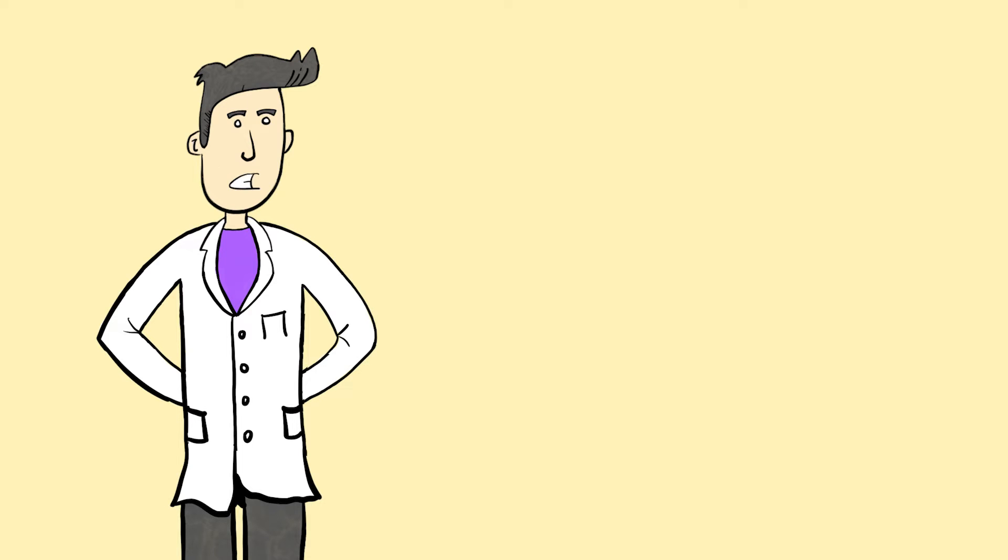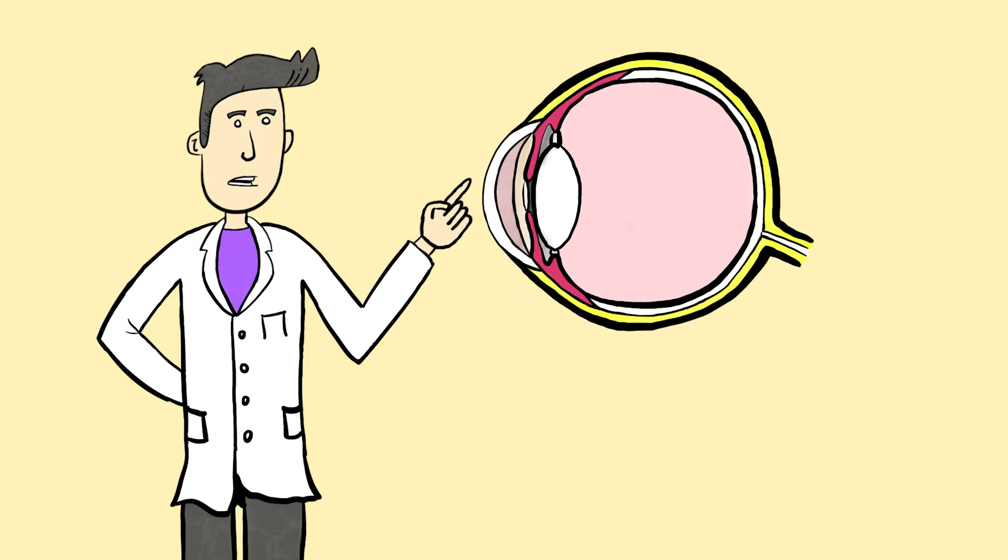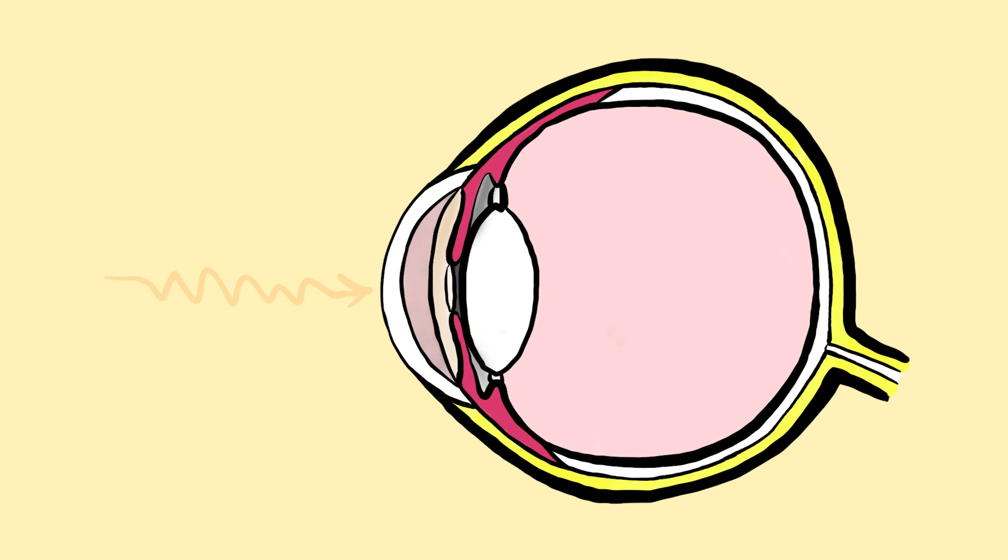But before we discuss this technique of gene therapy, let's understand how the eye normally works. When light enters your eye, it passes through the cornea, pupil, then the lens, with the cornea and lens working together to focus the light onto the retina.